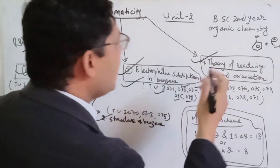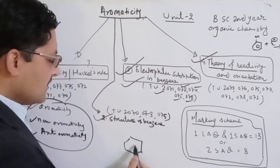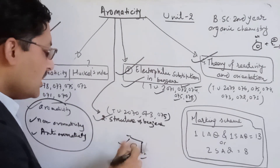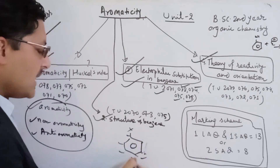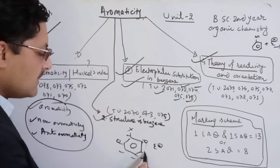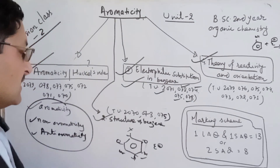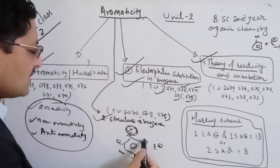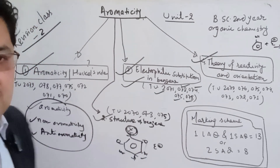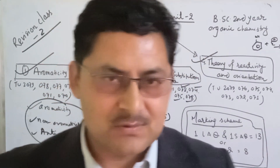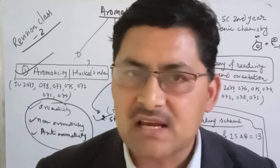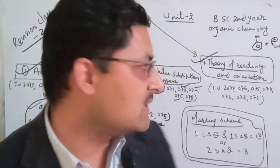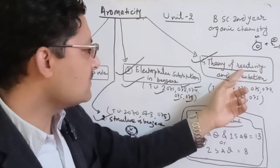The orientation is that if benzene is in the electrophilic substitution reaction, there can be ortho, meta, or para products. This means certain groups direct incoming electrophiles. If there is an ortho-para director or a meta director, you can prove that this particular group is ortho-para directing or meta directing in electrophilic substitution. There are two theories: the theory of reactivity and the theory of orientation.